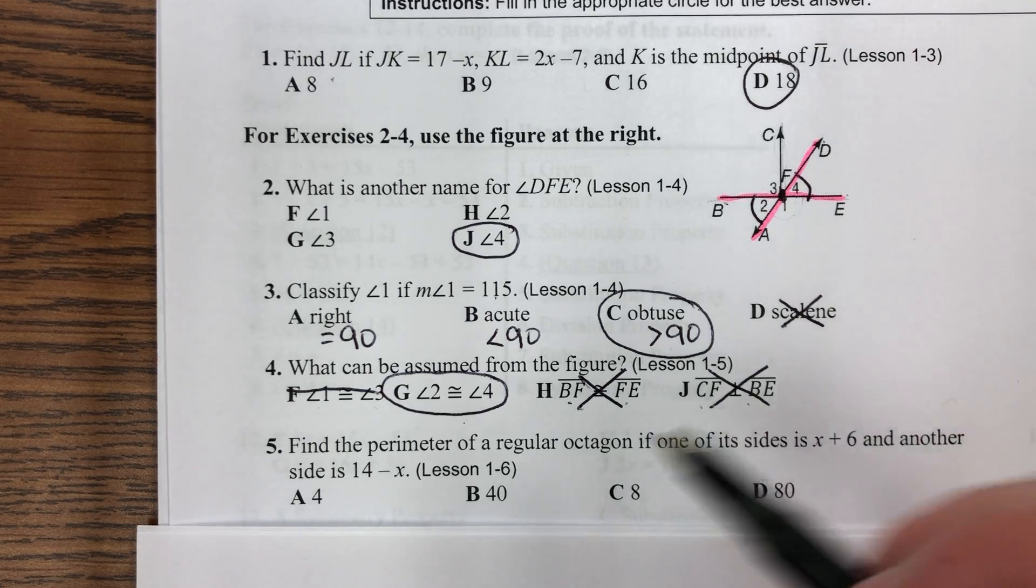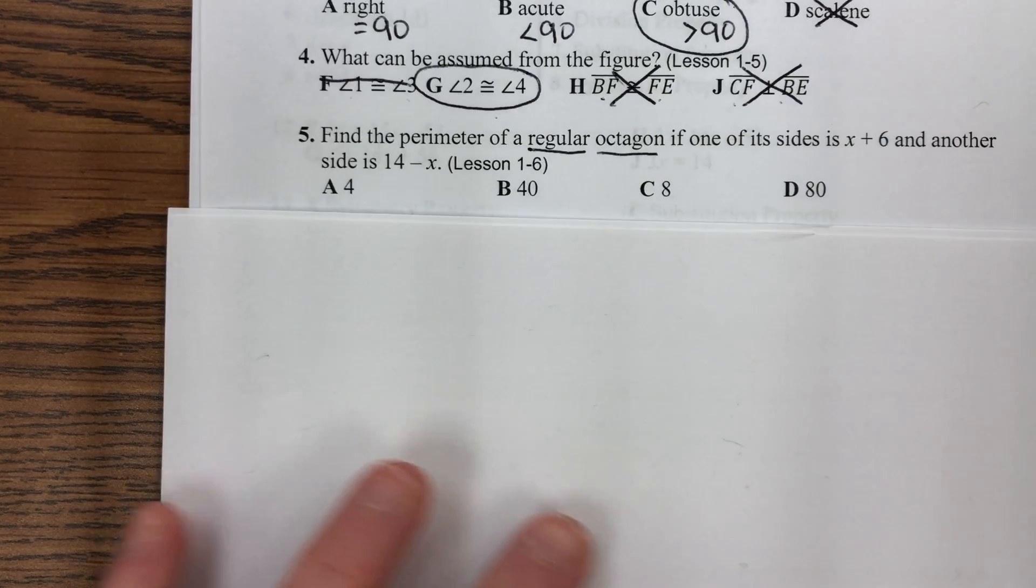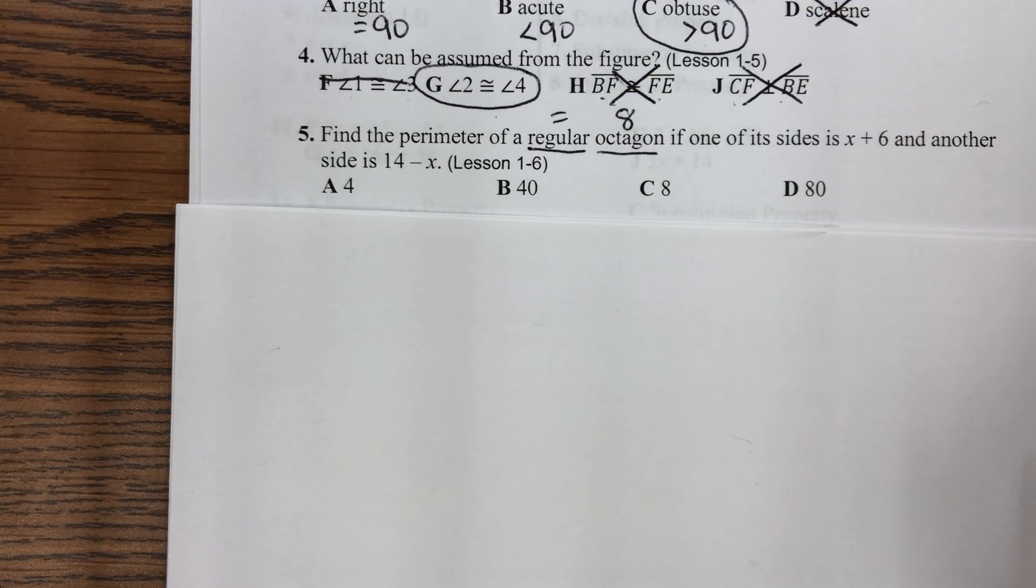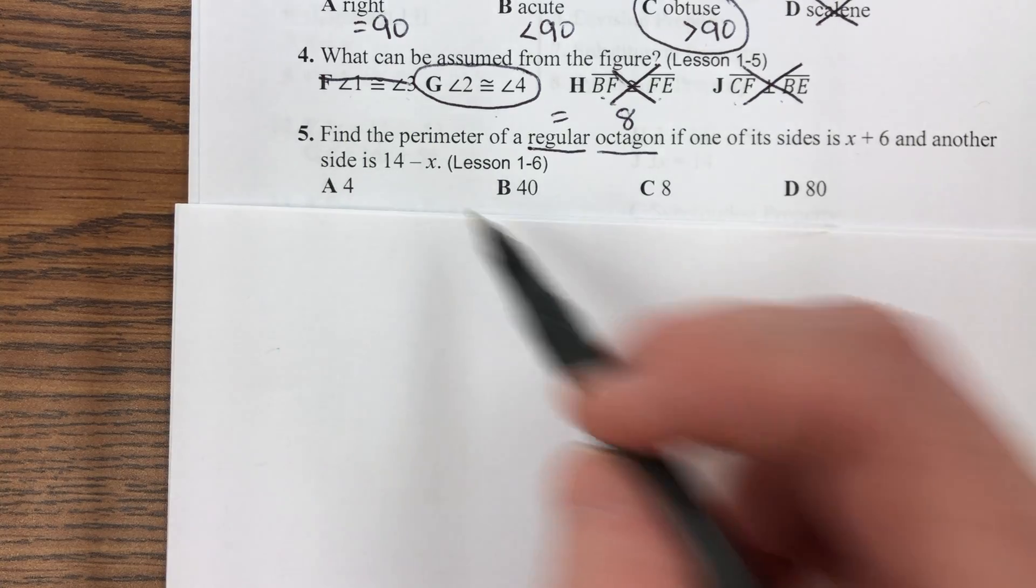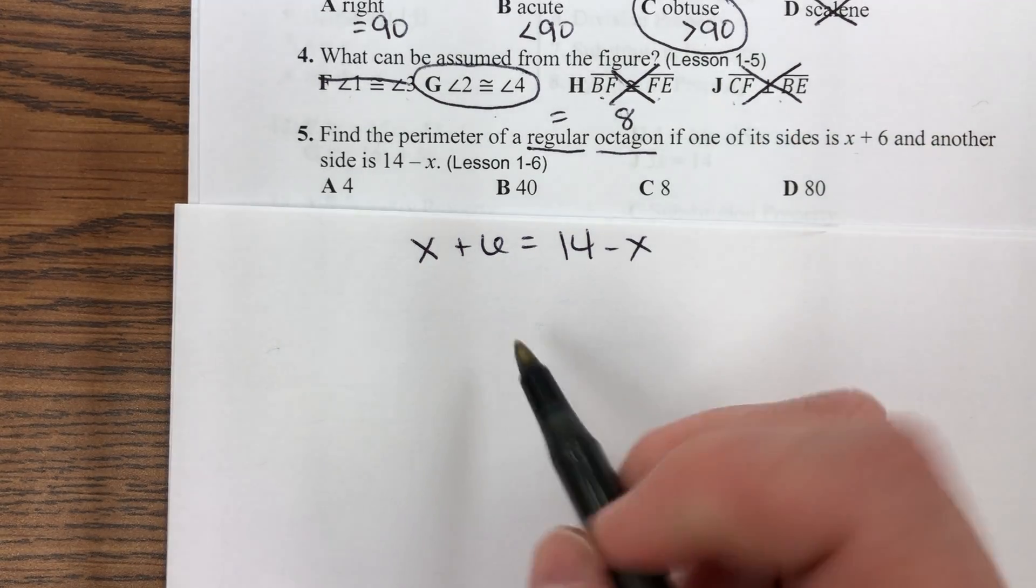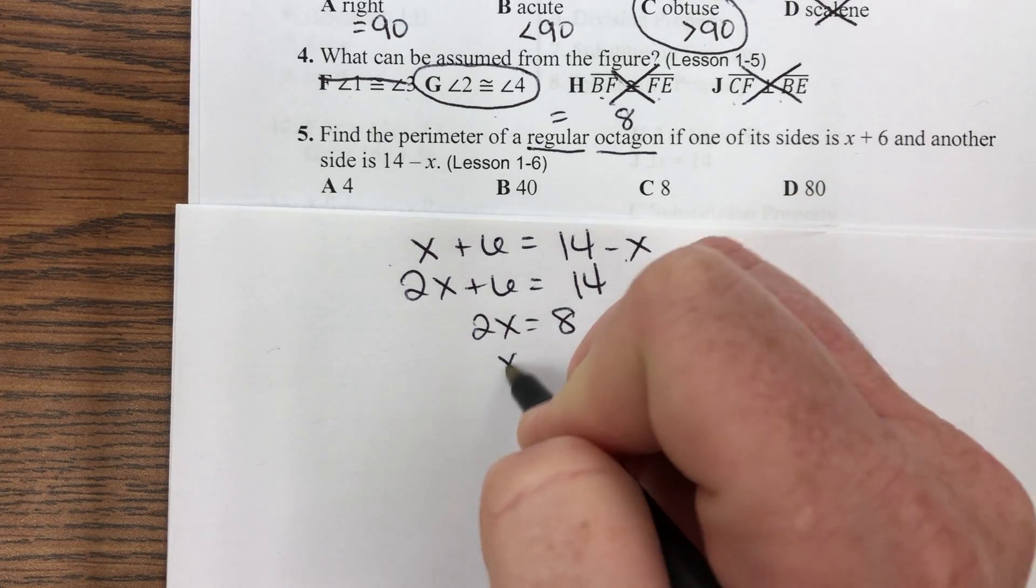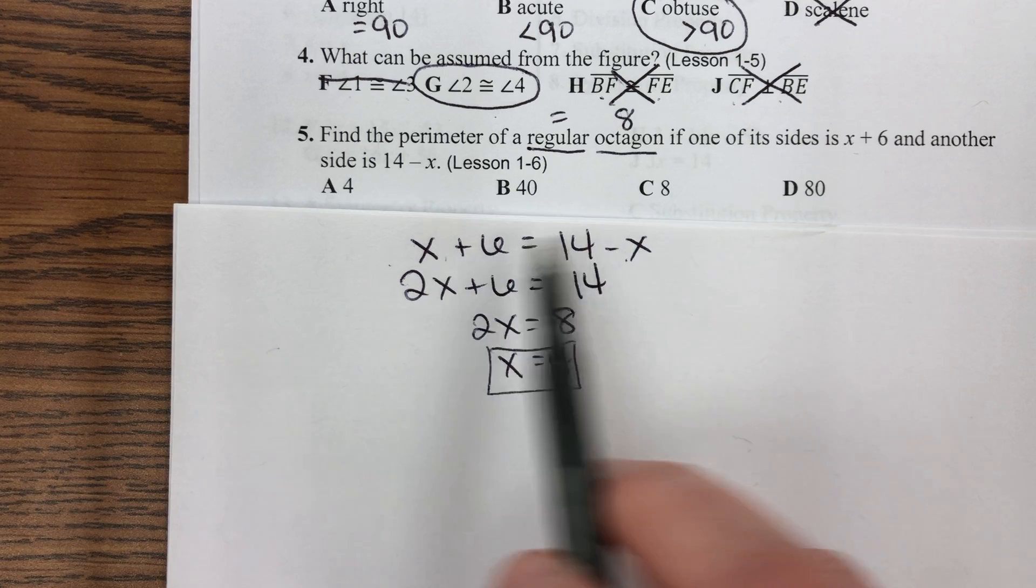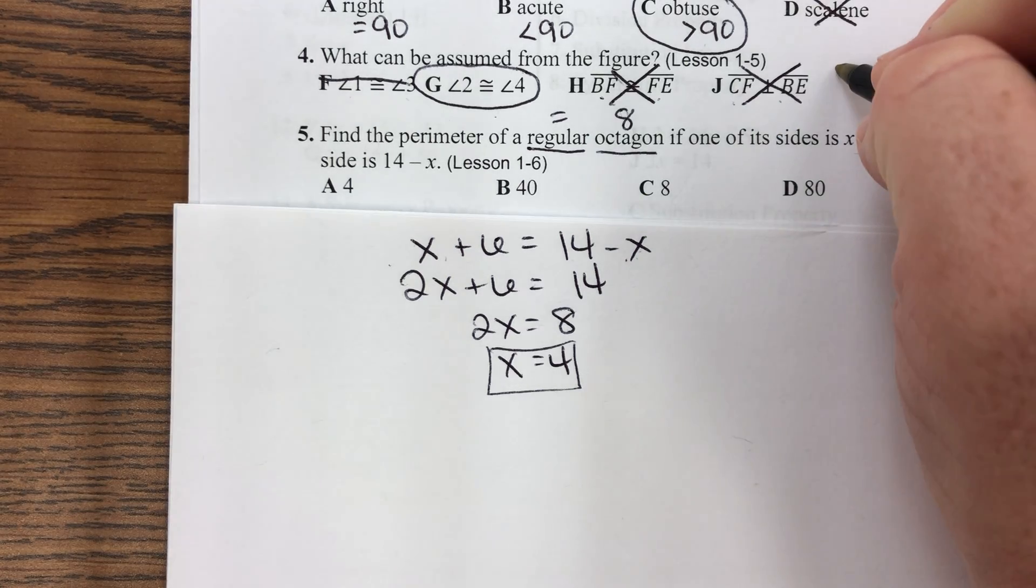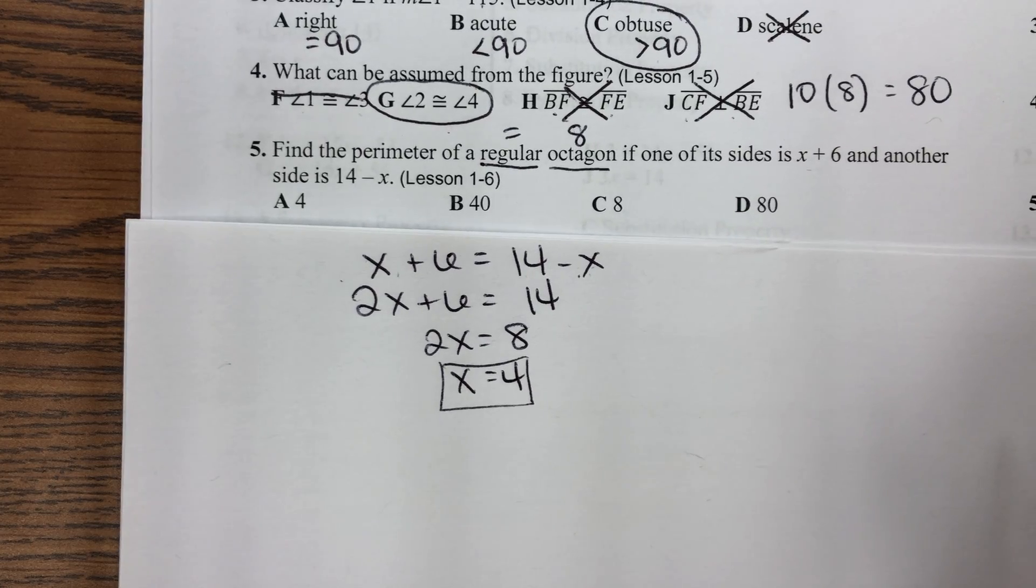Number five, find the perimeter of a regular octagon if one of its sides is X plus 6 and another side is 14 minus X. So why do they tell us it's a regular octagon? Regular octagon has eight sides and all eight sides are equal. That's what makes it regular. So if two of the sides are X plus 6 and 14 minus X, I can set those equal to each other because they've got to be the same size if it's a regular octagon. So I get rid of my smallest X, subtract 6 from both sides, divide by 2, X equals 4. So if I plug that back into either of these sides, 4 plus 6 is 10, 14 minus 4 is 10. So either way, I know that the sides of my octagon are 10 units and there's eight of them that are all that same size. So 8 times 10 is 80. My perimeter is 80 units.